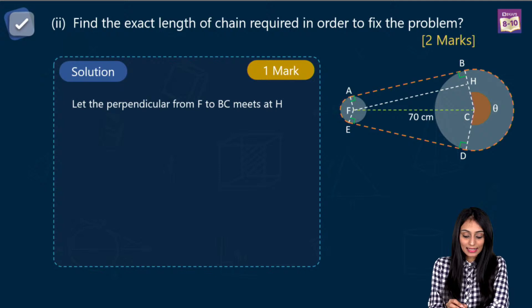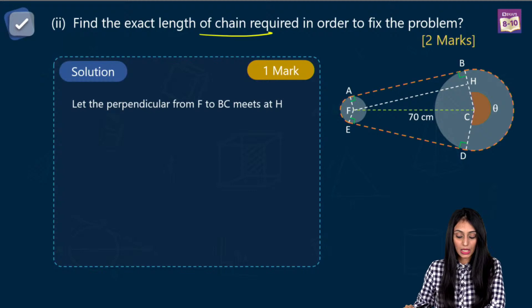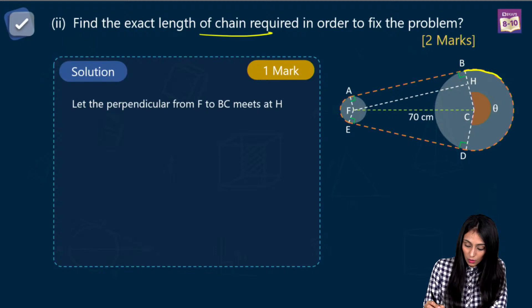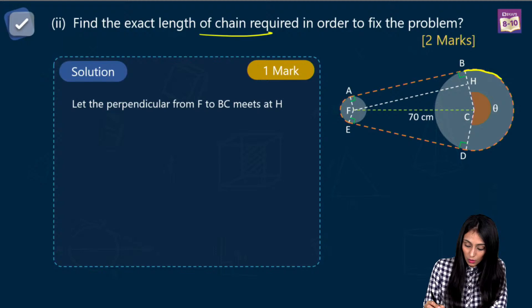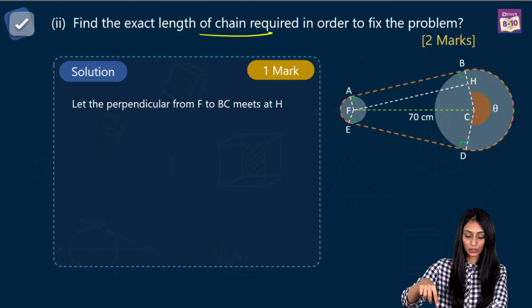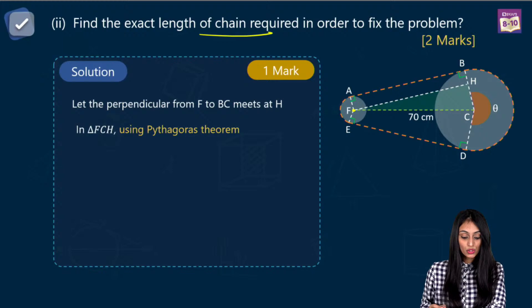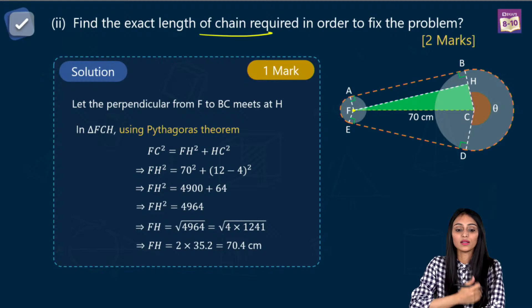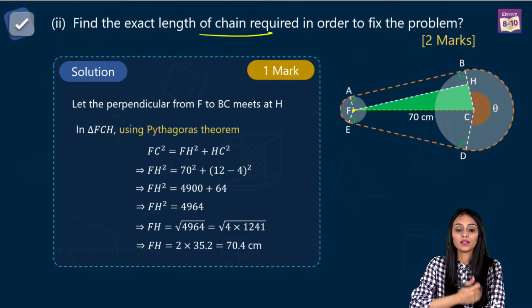Now find the exact length of chain required. The entire chain length includes L1, the two straight portions, and L2. To find the straight line length, drop a perpendicular from F to BC, meeting at H. In right triangle FCH, using Pythagoras: FH squared equals FC squared minus HC squared. FC is 70, and HC is 12 minus 4 equals 8. So FH squared equals 4900 plus 64 equals 4964.